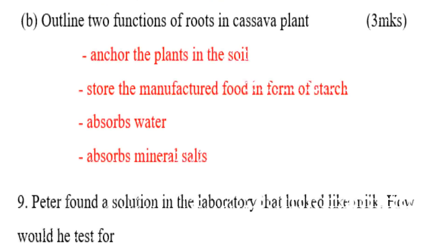Outline two functions of roots in a cassava plant. Number one: to anchor the plant in the soil. Number two: to store manufactured food. Number three: to absorb water. Number four: to absorb mineral salts.